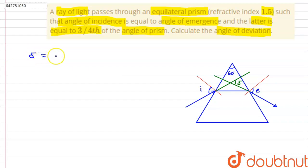delta equals angle of incidence plus angle of emergence minus the angle of prism. And the question says that angle of incidence is equal to angle of emergence and angle of emergence is equal to 3/4th of angle of prism.